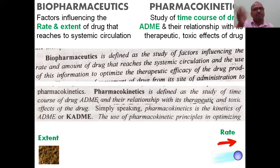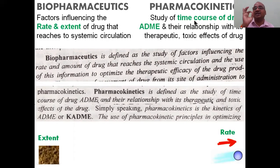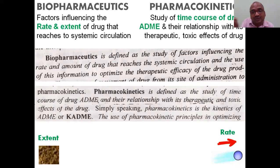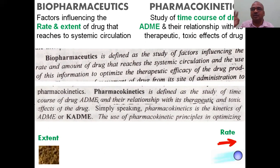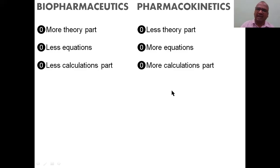Compare biopharmaceutics with pharmacokinetics. Biopharmaceutics is about factors influencing rate and extent. Pharmacokinetics is the study of the time course of ADME — kinetics means movement, speed, velocity. At what speed is a drug absorbed, distributed, metabolized, excreted? Always comparing with time. In biopharmaceutics you get more theory and less equations; in pharmacokinetics, less theory but more equations and more calculation.